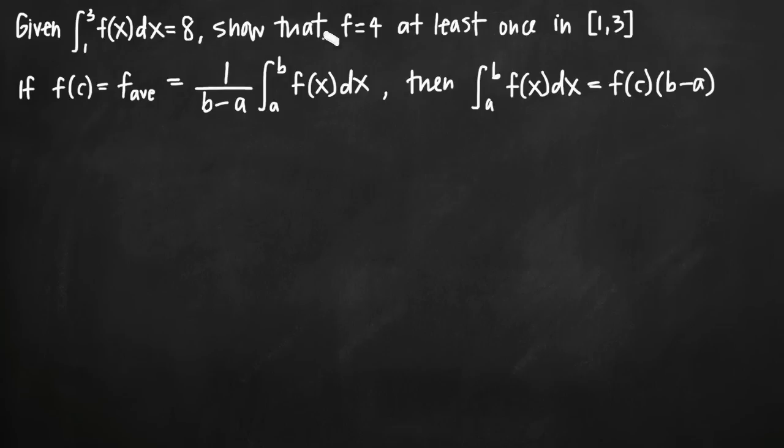What we're asked to say here in our problem is to show that the value of the function takes on the value 4 at least once in the interval. We can do that using the mean value theorem for integrals. So essentially, it's as simple as this. In order to prove that the function assumes the value 4 at least once on the interval 1 to 3, we use the second half of this formula here.